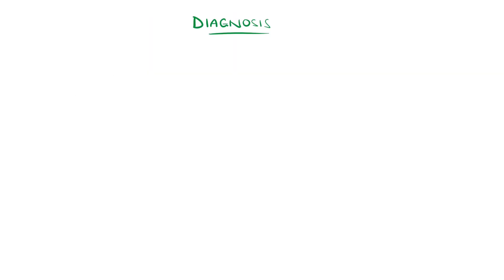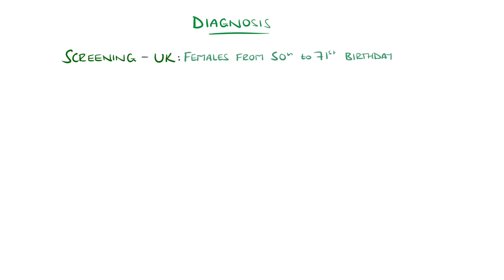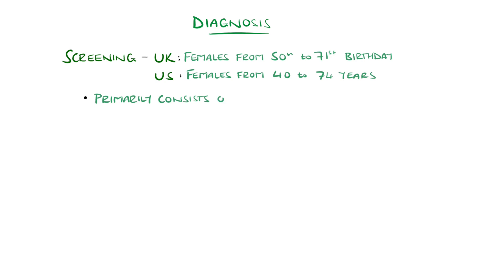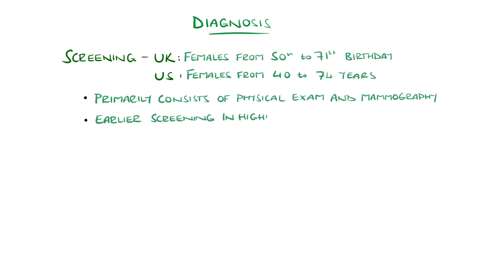The diagnosis initially may be suspected from presentation and physical exam, or may be detected from breast screening programs. Breast screening in the UK primarily involves females from their 50th birthday up to their 71st, featuring mammography. In the United States, the age range invited is 40 to 74 years. Earlier testing may be done in those with higher risk, for example a strong family history. Imaging such as ultrasound is generally first line in those presenting with symptoms, followed then by mammography.